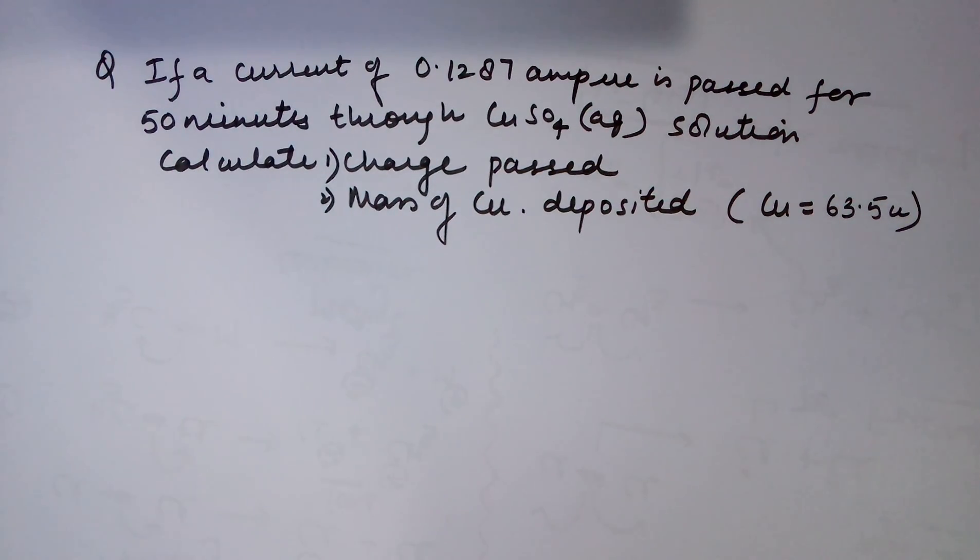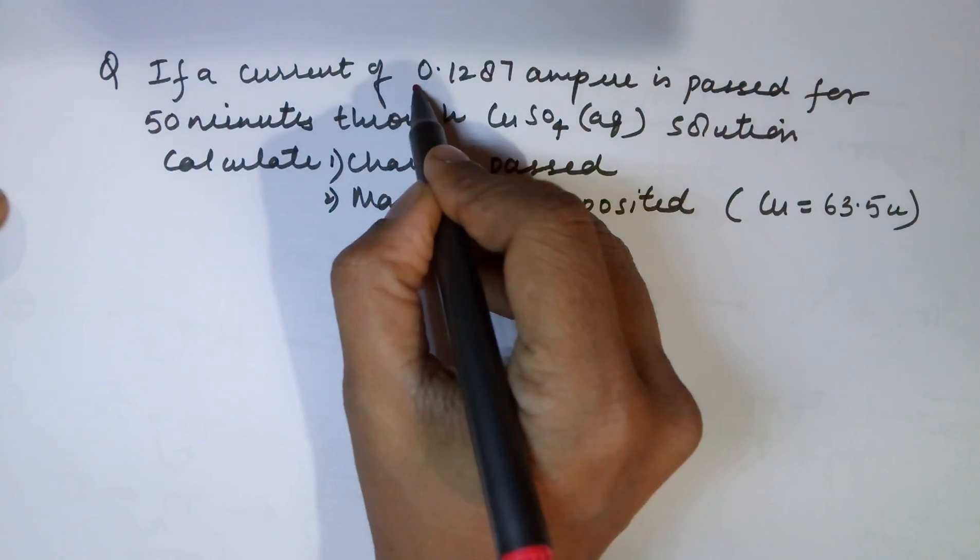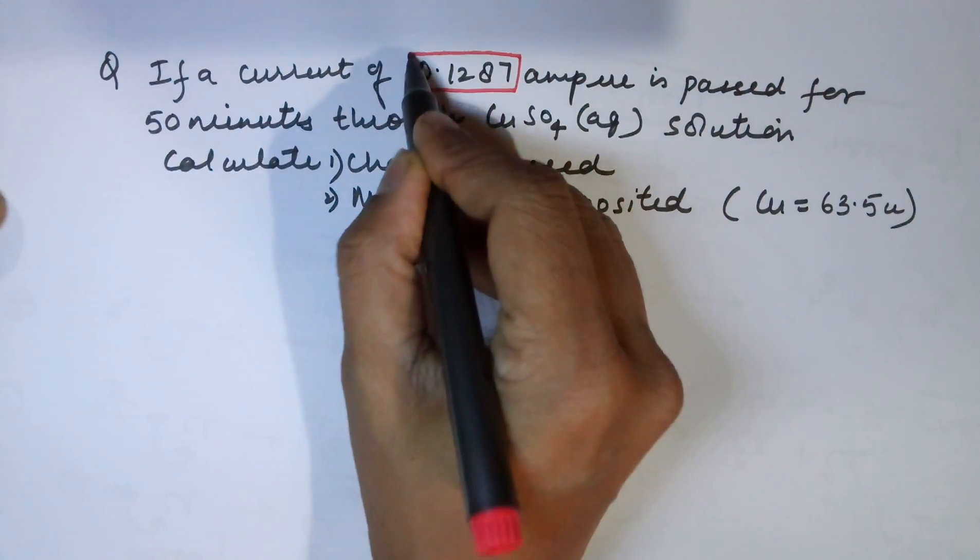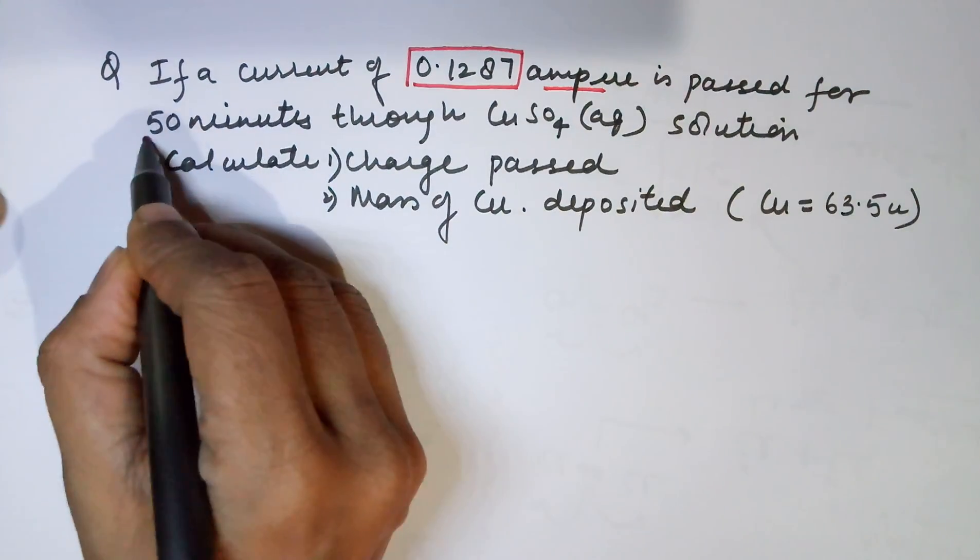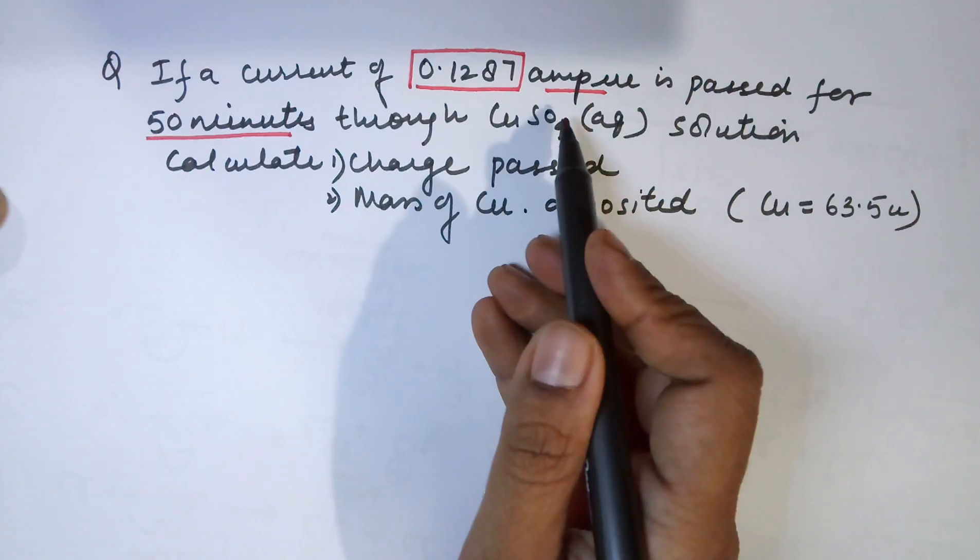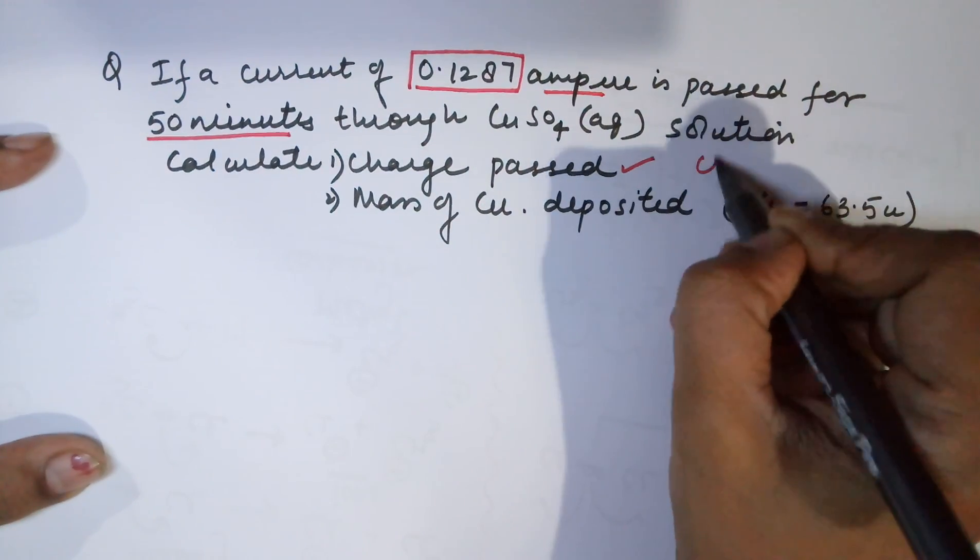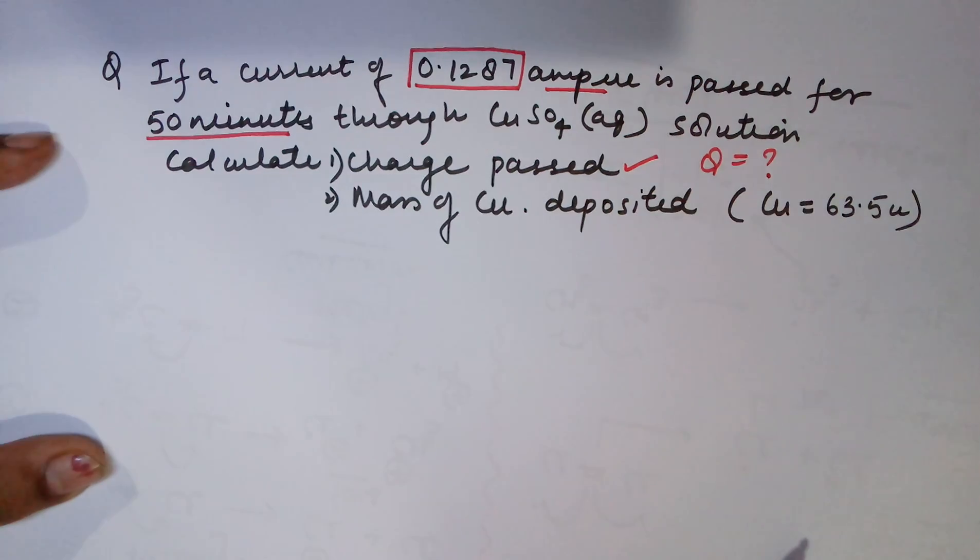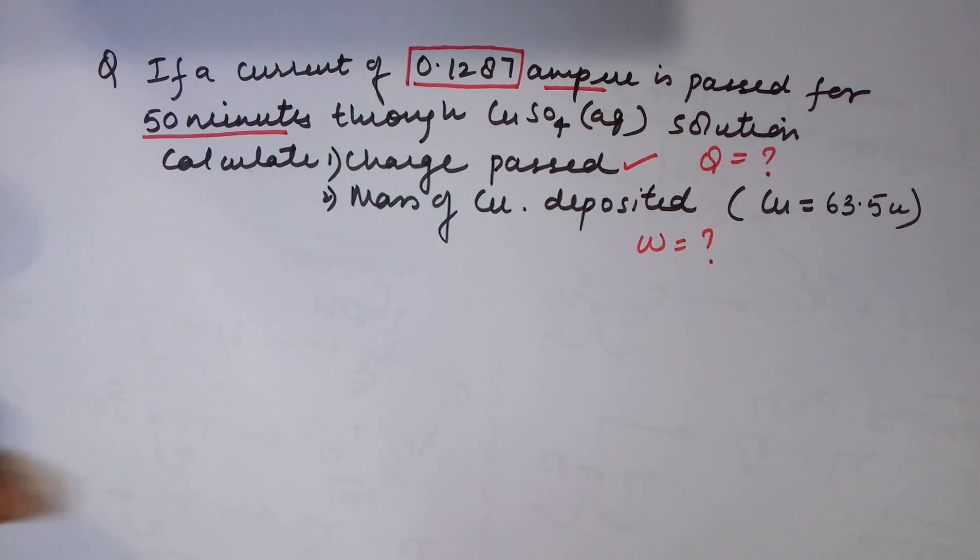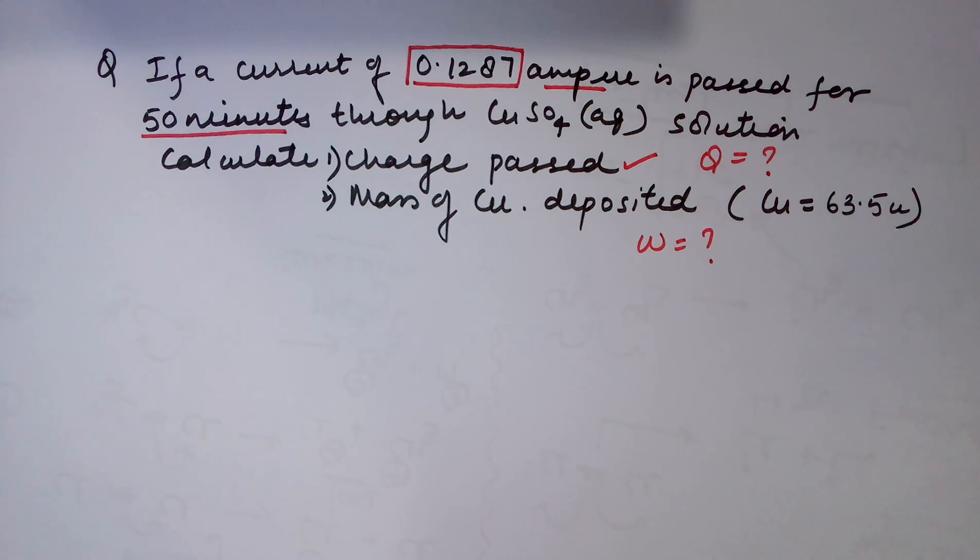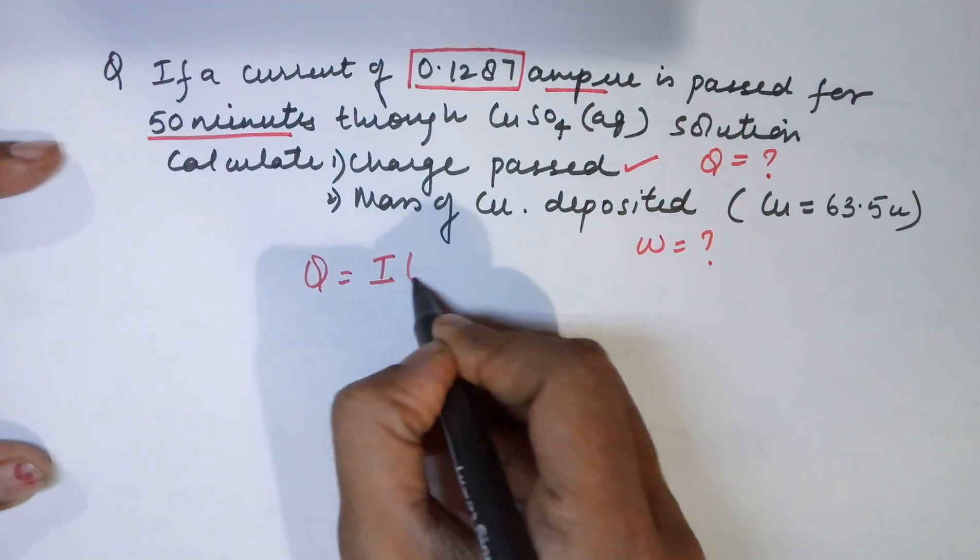The question says: if you have a current of 0.1287 amperes passed for 50 minutes through copper sulfate solution, you have to calculate the charge passed, that is, you need to find the value of Q, and the mass of copper deposited, that is, you require the value of W. Now Q, you know from the information, is equal to I × T.